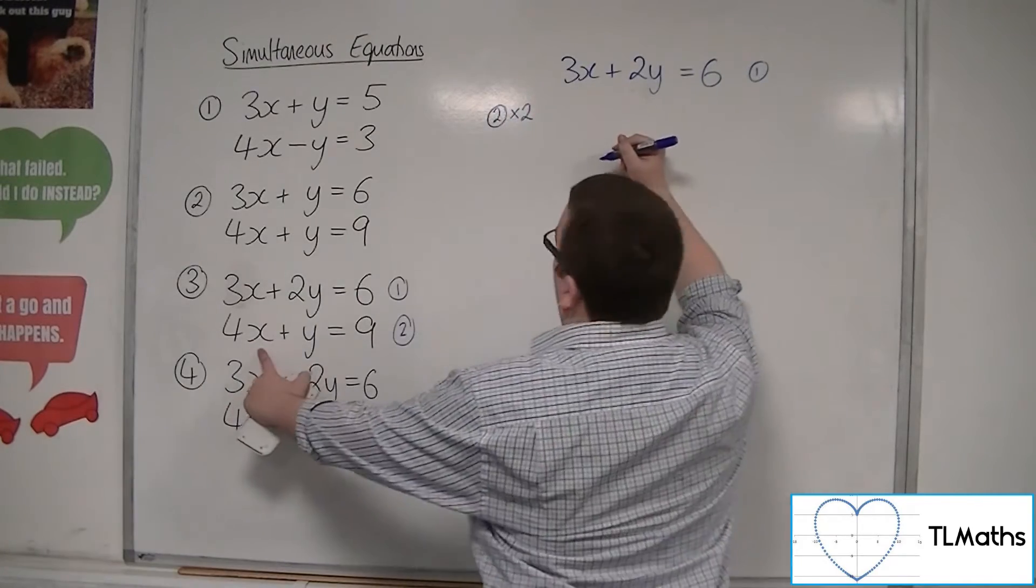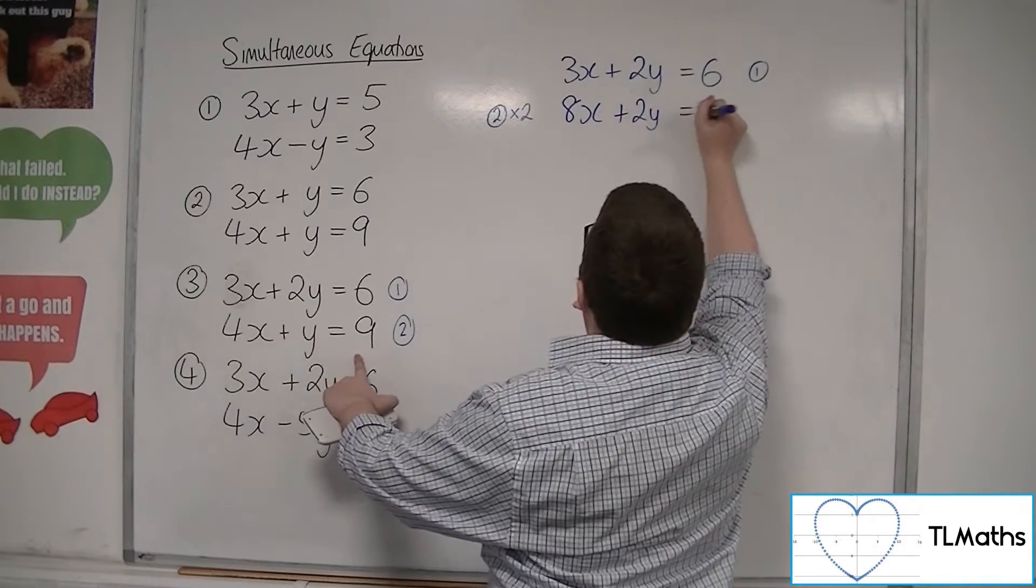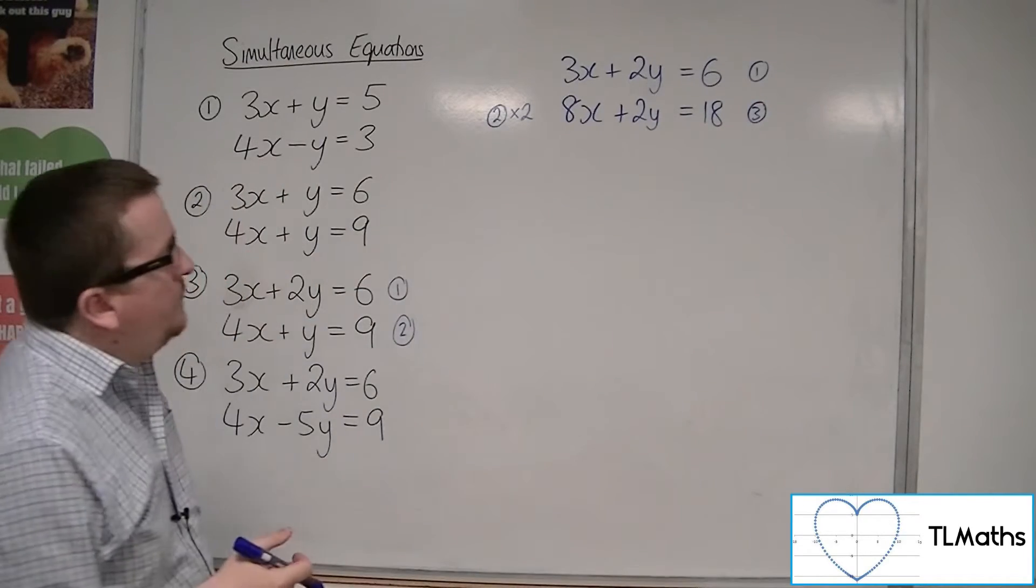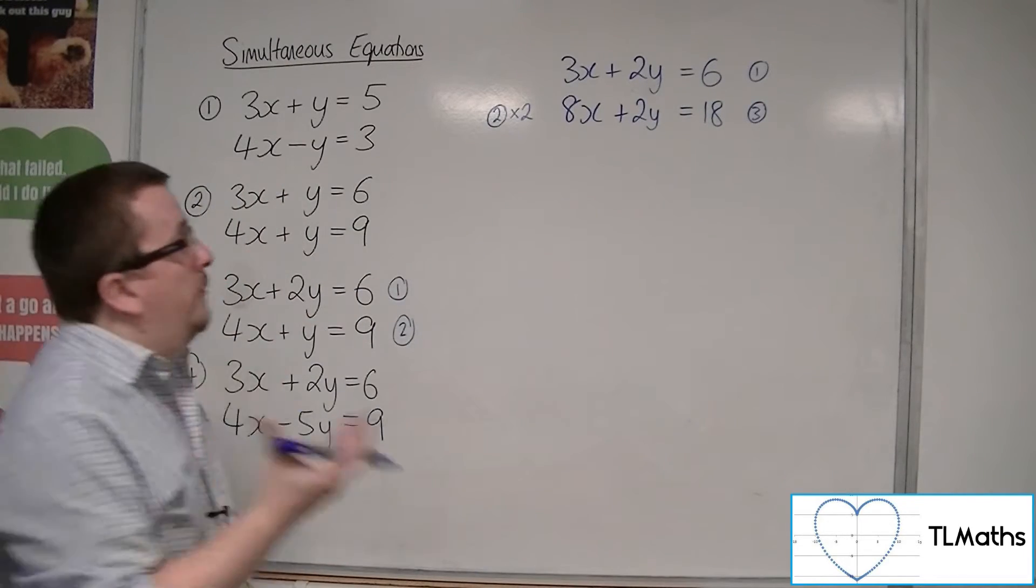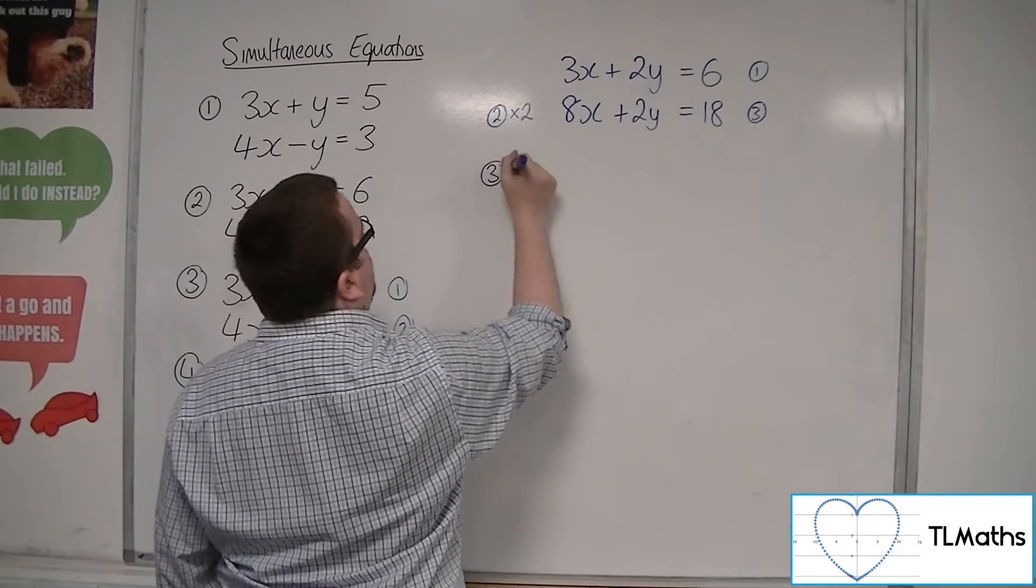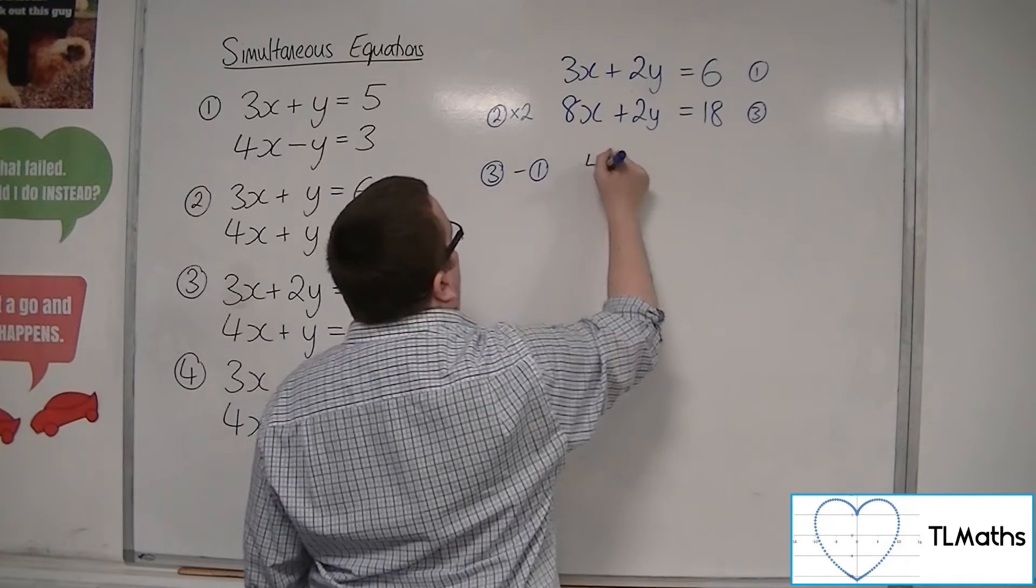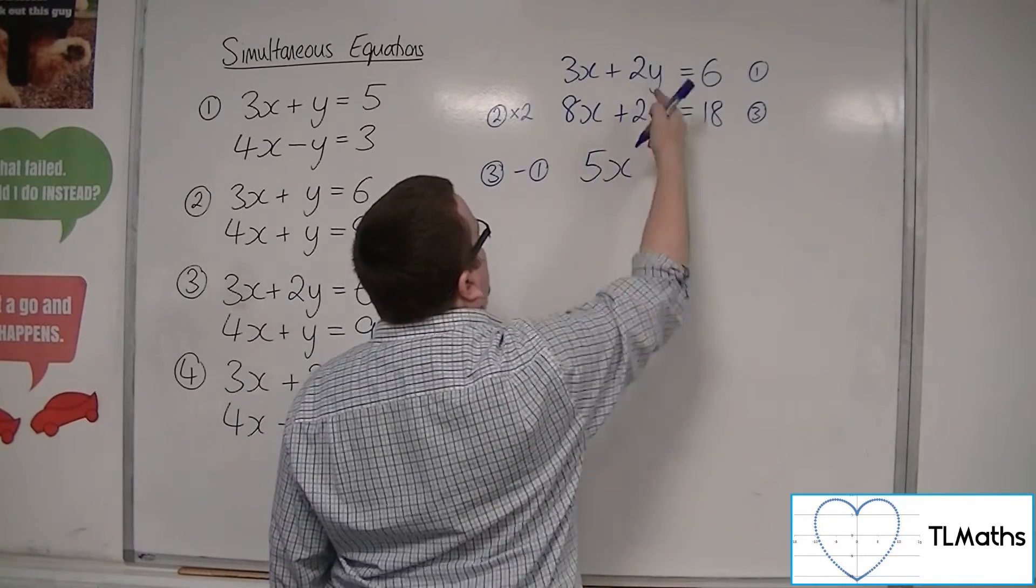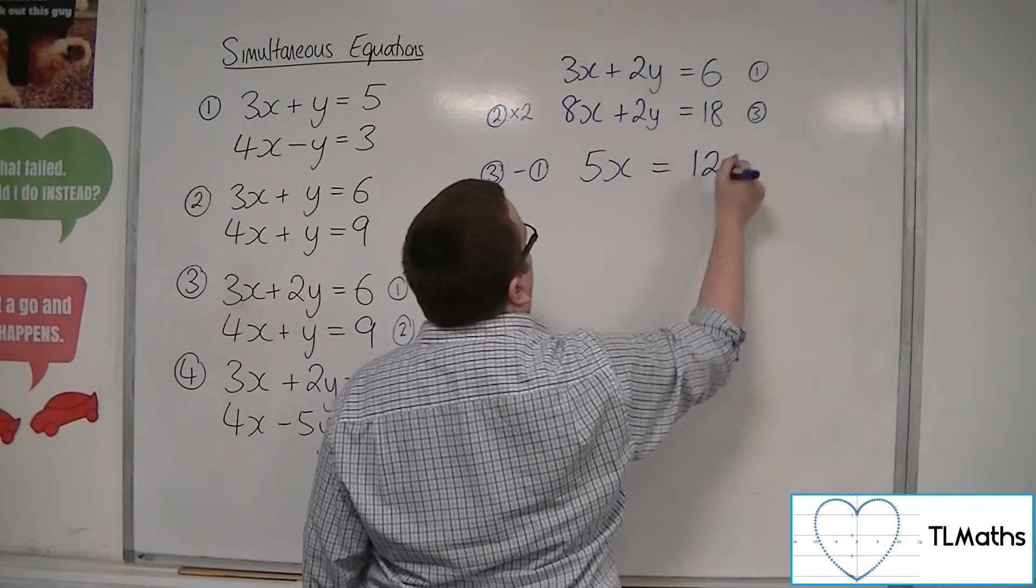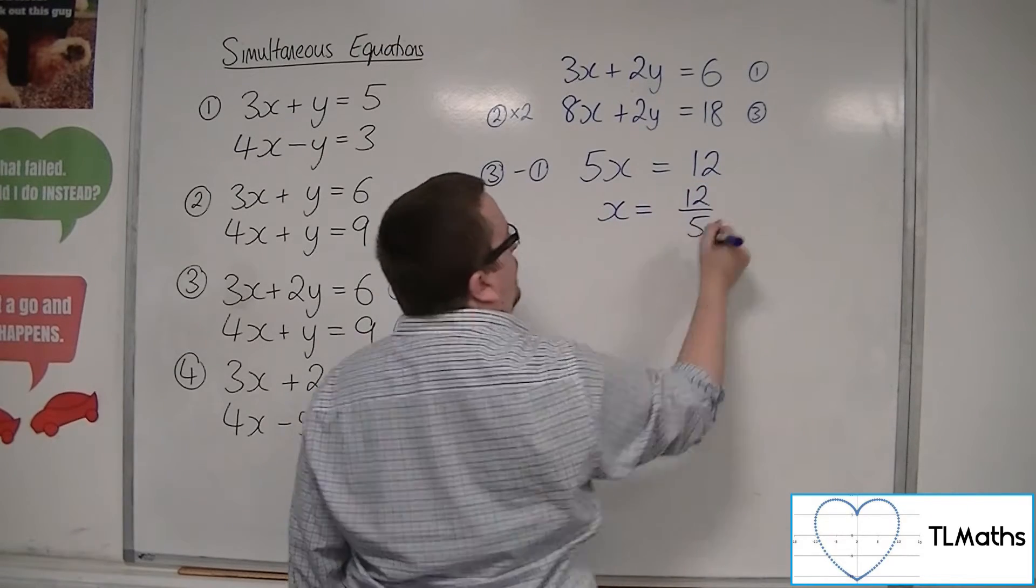So if I maintain equation 1 and then I multiply equation 2 by 2. So I'm going to get 4x times 2 so 8x, 2y and 18 and I'm going to call that equation 3. So now I can subtract one equation from the other to eliminate the 2y's. So equation 3 take away equation 1. 8x take away 3x is 5x. 2y take away 2y cancels out. 18 take away 6 is 12. So divide both sides by 5 and I get 12 fifths.